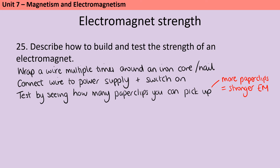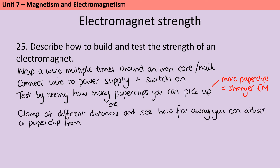Alternatively, you could clamp your electromagnet at different distances away from a paper clip on the table and see how far away you can move the electromagnet and still attract the paper clip. The further away you can move that electromagnet and still pick up a paper clip, the stronger the electromagnet is.